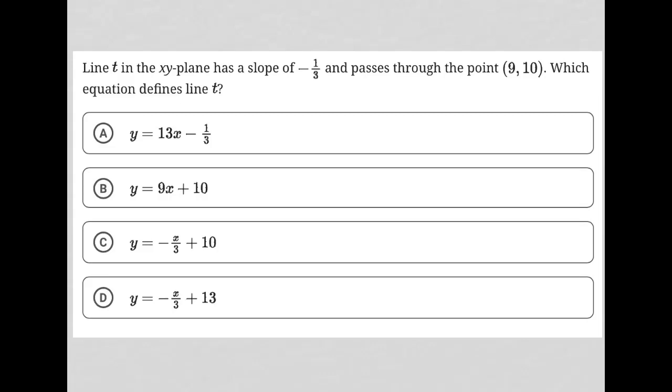This question says line T in the XY plane has a slope of negative one-third. I'll write down M equals negative one-third, where M represents slope. It passes through the point (9, 10). So we have a point and we have a slope. Which equation defines line T?